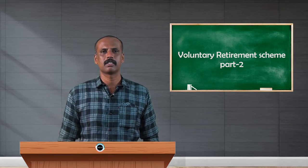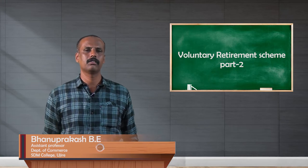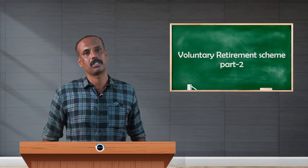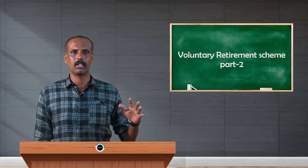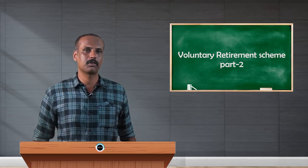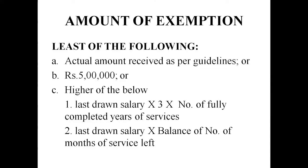In the last class we discussed exemption under Section 10(10c) related to VRS compensation — what we mean by VRS, what we mean by compensation, and the conditions. Now we discuss how much exemption is available. As per Section 10(10c), we calculate three different amounts, and the minimum of these three is the exemption. The excess over the actual compensation is taxable.